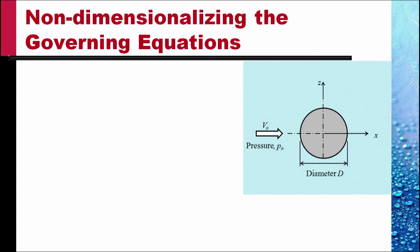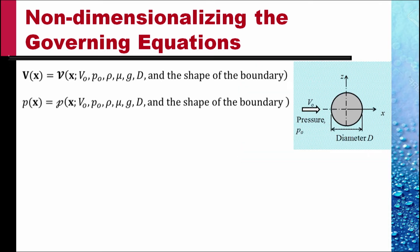And once this similitude is obtained, what should be the prediction rules used to predict the results for the prototype from the model results? We will consider the case of flow past a circular cylinder — incompressible steady flow — where the far upstream velocity is V naught, the pressure is P naught, and the cylinder diameter (two-dimensional) is d.